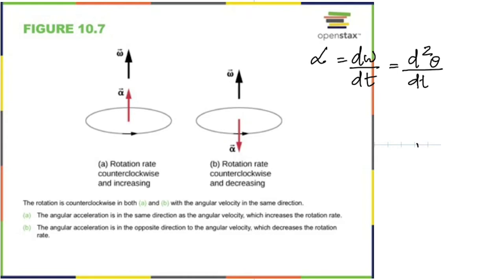Alpha can also be written as d²θ/dt², because omega is dθ/dt, so it's d/dt of dθ/dt — a second-order differential. That's where you begin learning about differential equations. We're going to use differential equations in physics at a basic level here, but at higher levels like a master's in physics, you use all of this at a much deeper level.